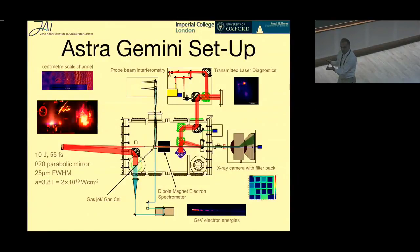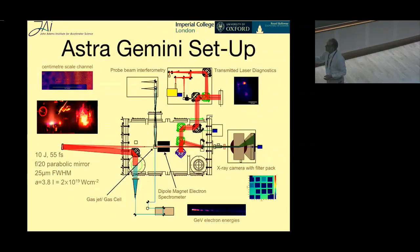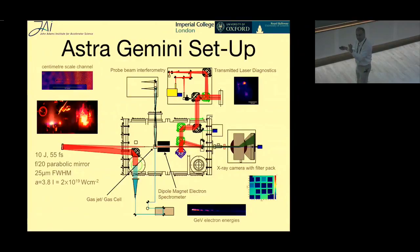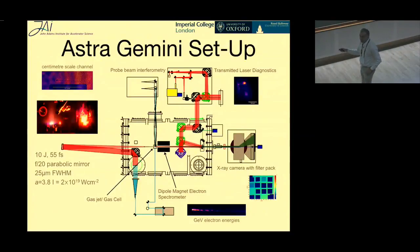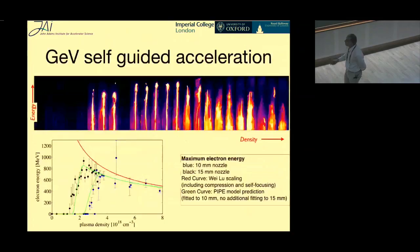We do some optical probing, and this interferogram shows that even though our Rayleigh length is of the order of millimeters, because of relativistic self-focusing we can typically get easily centimeter-scale interaction. This is a centimeter gas jet, and you can see that even after a centimeter there's still a guided filament of high intensity. The main diagnostic uses magnets that deflect electrons sideways depending on their momentum, from which we can tell their energy. We also typically put in a radiation detector, because radiation will be produced as well.